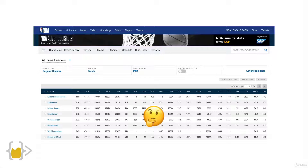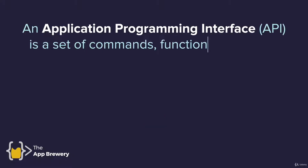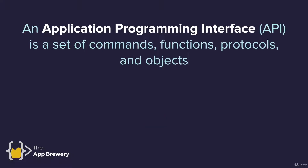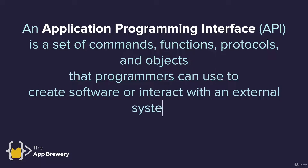Now, what if we wanted to use the data that they have? How can we tap into it and use it in our own programs? Well, that's where application programming interfaces come into play. They are a set of commands, functions, protocols, and objects that programmers can use to create software or interact with an external system.